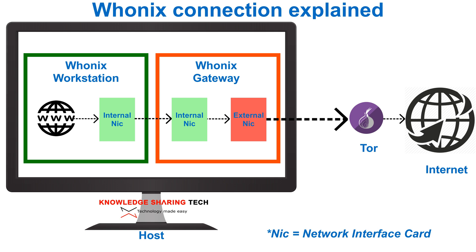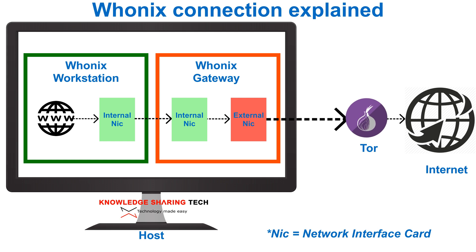When you browse the internet on the workstation, the request is sent to the gateway via the internal network, and then the gateway sends the request to the internet via the external NIC through the Tor network. This way the workstation is isolated from the internet.